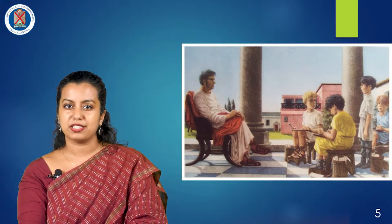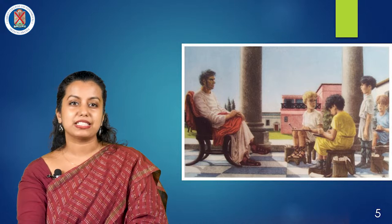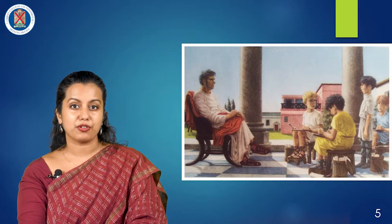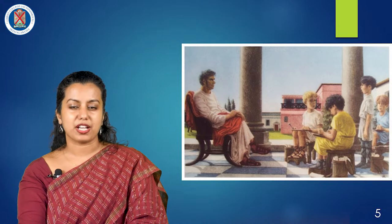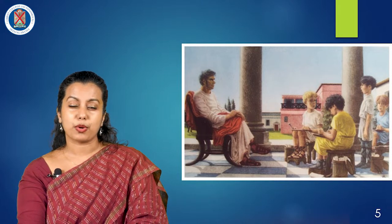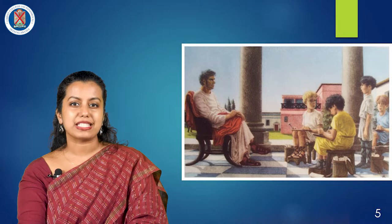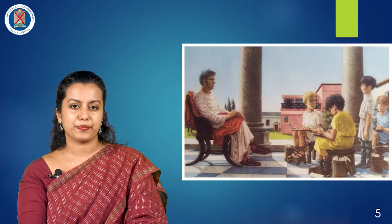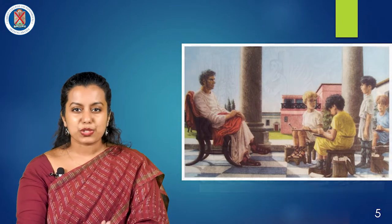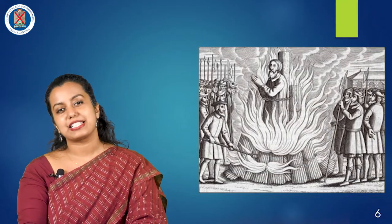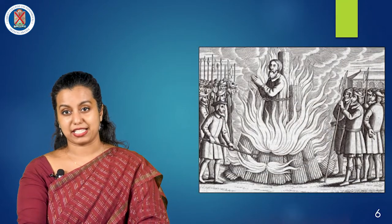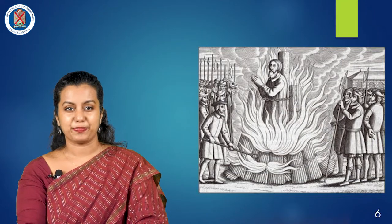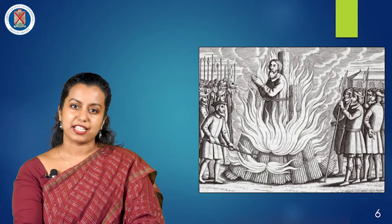However, there was a confusion among the early translators like Cicero, Horace, and Quintilian about the type of translation to adopt. They argued whether word for word or sense for sense is the right way to translate. This was because any error in the target text may deem the translator as a heretic and can get him burned at the stake.